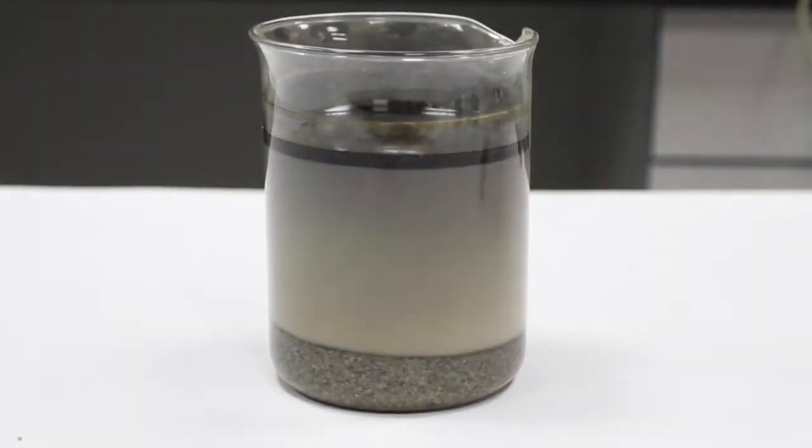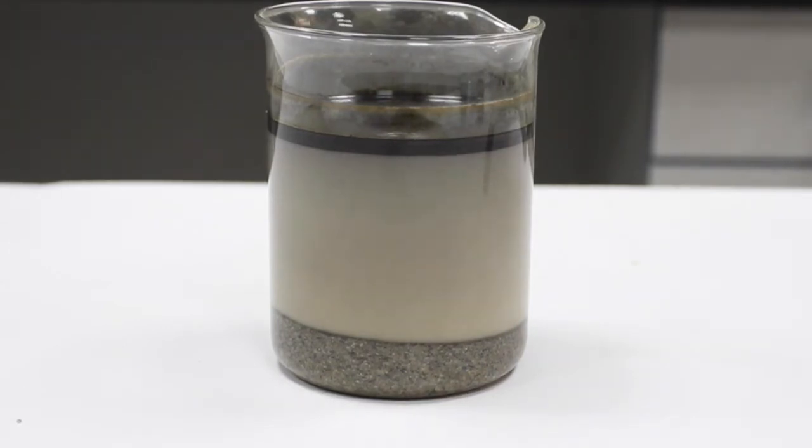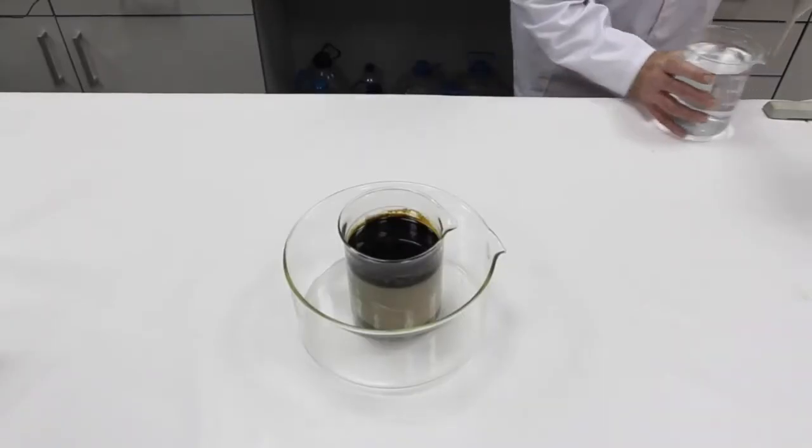The stirrer is removed and left to stand for 5 minutes. If left resting longer, you could see how the emulsion changes color, leaving the lower part lighter and the upper part darker. This occurs because the crude oil rises to the surface.